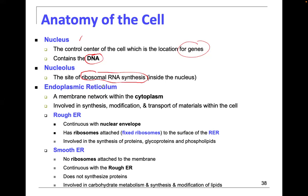The endoplasmic reticulum, the ER, is the membrane network within the cytoplasm. It's involved in the synthesis, modification, and transport of materials within the cell — like a circulatory system at the microscopic level. We have a rough ER and a smooth ER. The rough ER is continuous with the nuclear envelope, has fixed ribosomes attached, and is involved in the synthesis of proteins, glycoproteins, and phospholipids — all needed for the cell membrane.